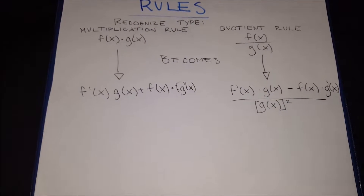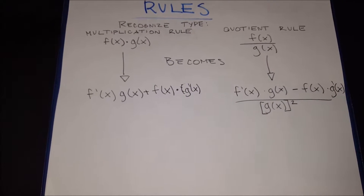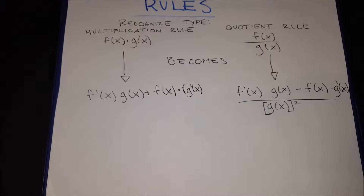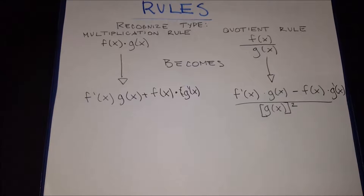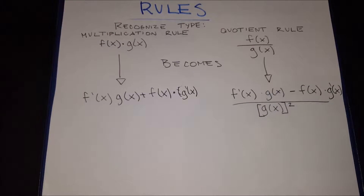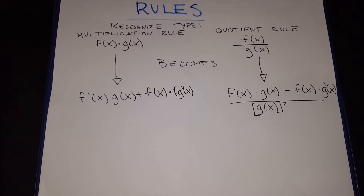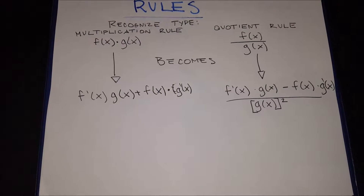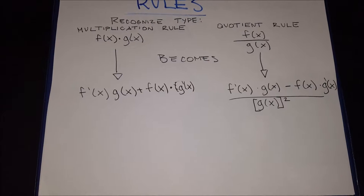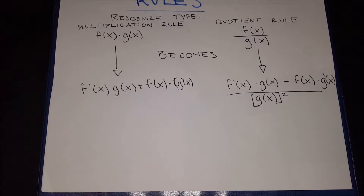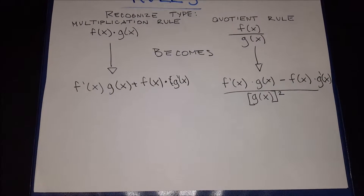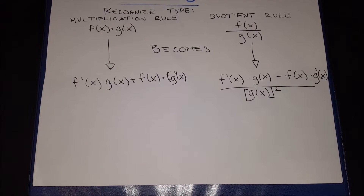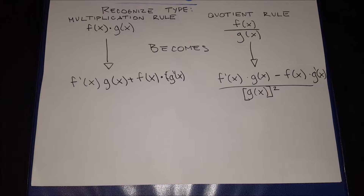Here we have the basic rules from the original function to the derivation. If you have two functions in terms of the same variable, you're going to multiply the first function's derivative by the second function, adding the original function multiplied by the derivative of the second function. For the quotient rule, it's basically the same thing — the original function divided by a second function becomes the derivative of the original times the second function, minus the original function times the derivative of the second function, all over the second function squared.